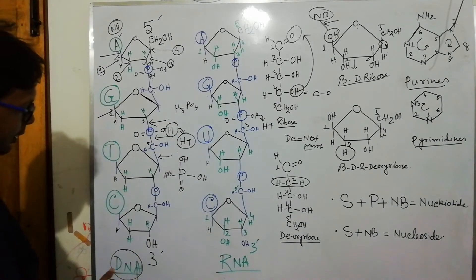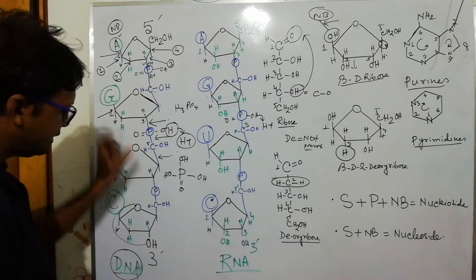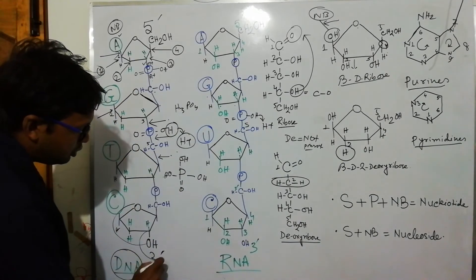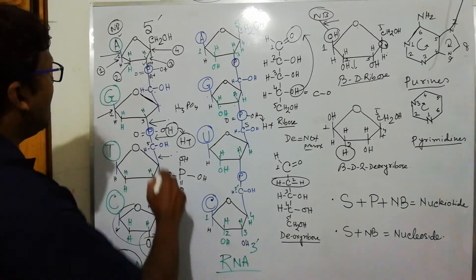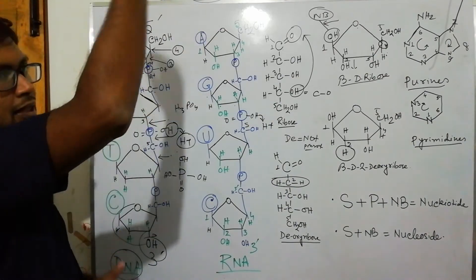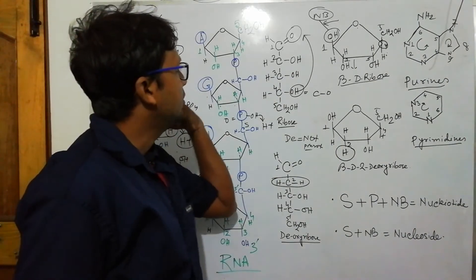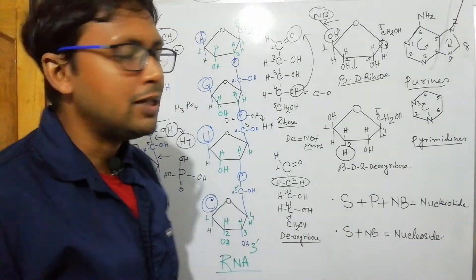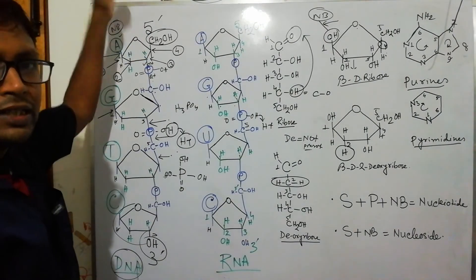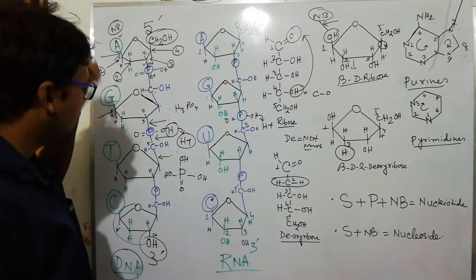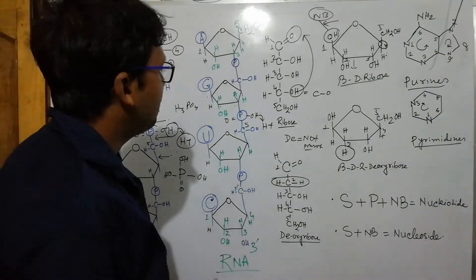Why is it called five-prime to three-prime? At the end of a DNA chain, one three-prime OH molecule will always be free — that is the three-prime end. At the upper end, one five-carbon molecule is free — that is the five-prime end. So five-prime and three-prime endings are simply due to which carbon remains open at each terminal sugar molecule.